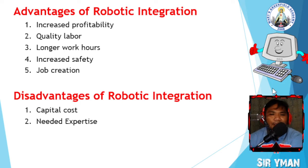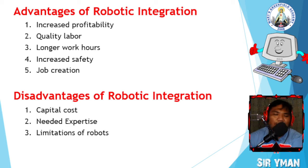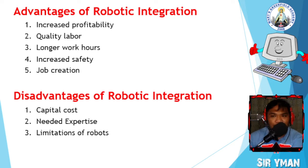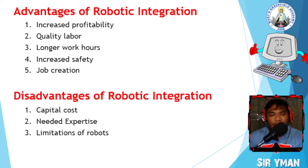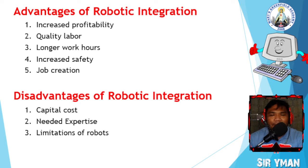The third and last disadvantage of robotic integration is the limitations of robots. Robots can have their own limitations. Although industrial robots remain an attractive alternative over human labor, there are still tasks that robots cannot perform. Robots depend upon their surrounding systems such as vision systems, grippers, and conveyors. When a task is too complex, robotics cannot handle it — humans must do it. For simple tasks, robots; for complex tasks, humans.